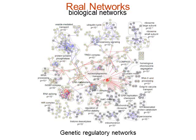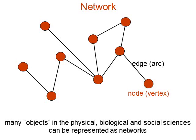The problem is that this description is so general that you can say something about the system, but not too much. One interesting finding from research over the last decade is that many topological properties of these systems are similar — like the degree distribution, where the fraction of nodes with a certain number of connections typically follows a broad distribution like a power law. Many systems also show the small-world property: the typical number of hops to move from one node to another is small compared to the total network size.